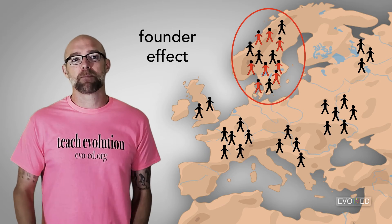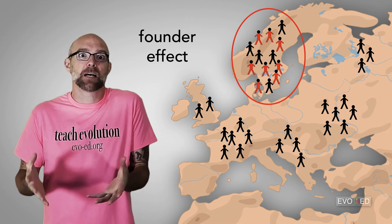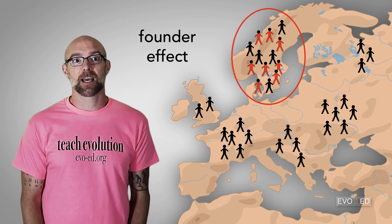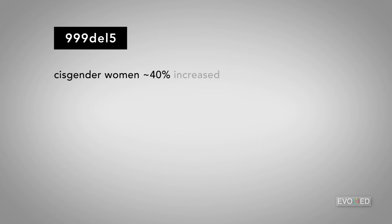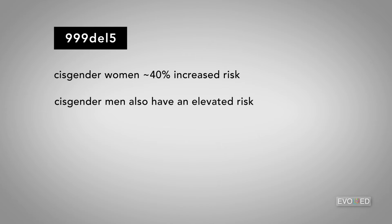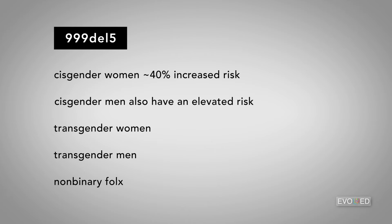Not everyone from that part of the world would have this 999-del5 genotype, but you would have to have some Scandinavian ancestry in order to have a chance of carrying this particular mutation. We know that cisgender women who carry this mutation have about a 40% increased chance of developing breast cancer. We know that cisgender men who carry the mutation also have an elevated risk of developing breast cancer. And while cancer research, at least historically, has pretty much only focused on cisgender men and cisgender women, it's quite likely that anyone carrying this mutation — including transgender women, transgender men, and non-binary folks — would have an increased chance of developing breast cancer.